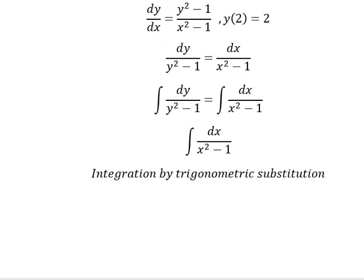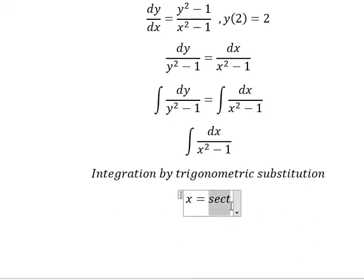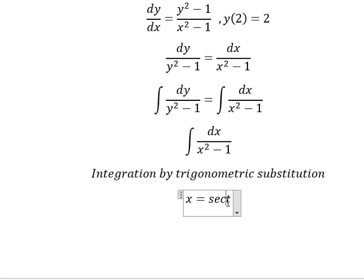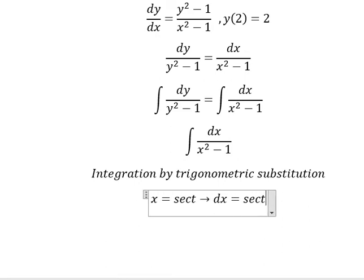So I will put s equals to secant of t. Because if I put this one go here, we have secant of t squared minus 1. We change by tan t squared. And later we simplify by ds. Next, ds we have secant of t tan t dt.